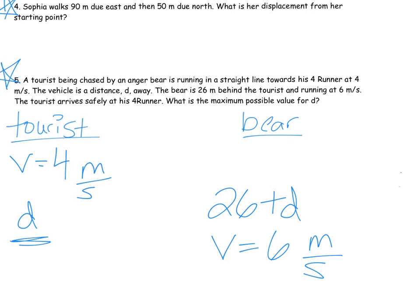The question here really is about the value of d, or distance, that the tourist is from the four-runner. If the distance is shorter than the value for d, the tourist is going to be fine. We really want to worry about the maximum - we want to worry about the bear and the tourist reaching the car at the same time. That's the biggest distance it can be and the tourists still be able to get away safely. In that case, the tourist and bear arrive at the same time, so their times should be equivalent. The time for the bear and the time for the tourist should be the same.